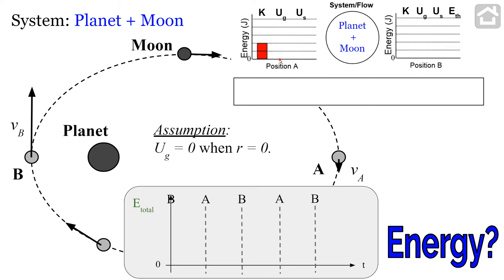What about gravitational potential energy? We have a mass at some height above the planet, and any time a mass is separated from an object that's gravitationally attracting it, they have gravitational potential energy. We define the system to have zero gravitational potential energy when R is zero — if the moon's center of mass were at the center of mass of the planet. At position A, R is not zero, so it has gravitational potential energy — let's say four bars. So position A has two bars kinetic plus four bars gravitational.